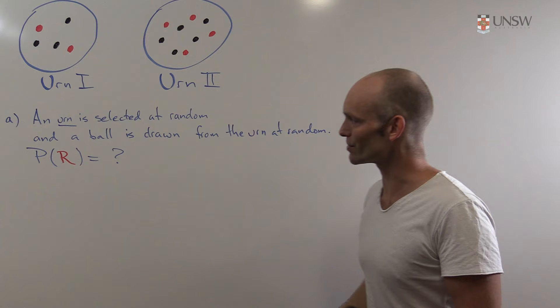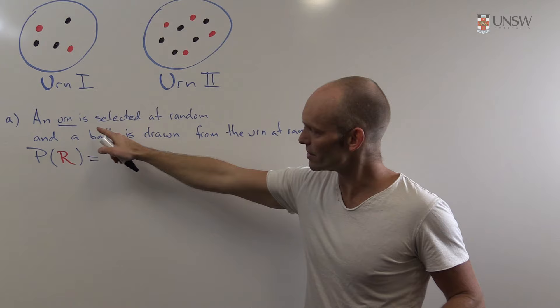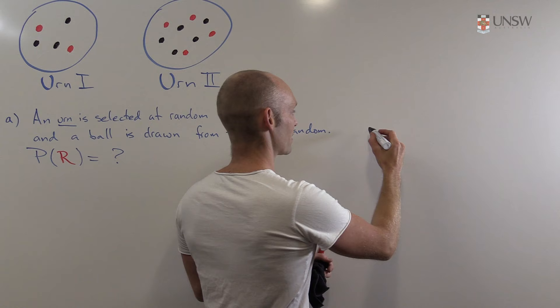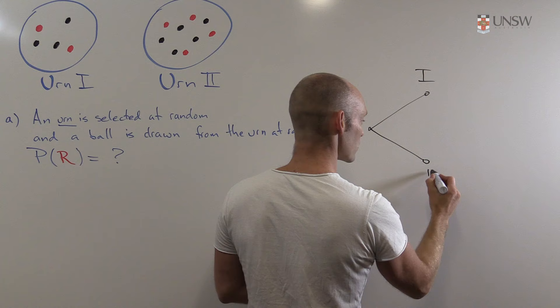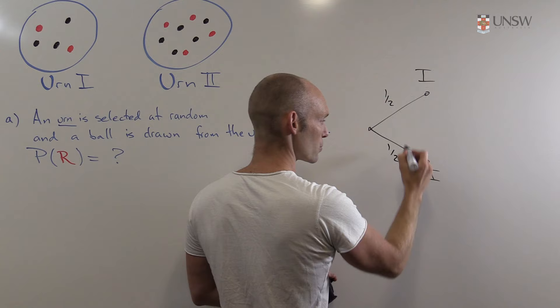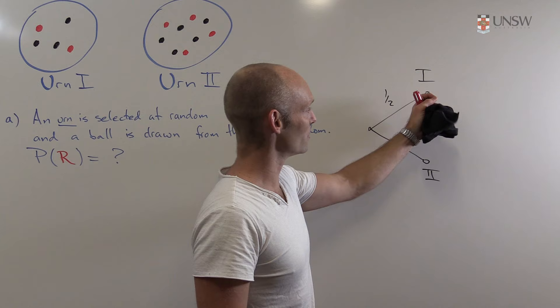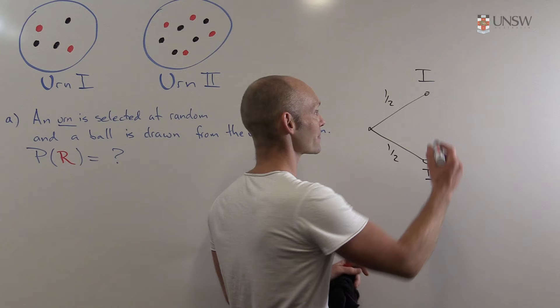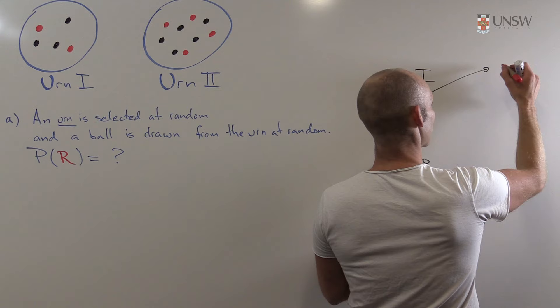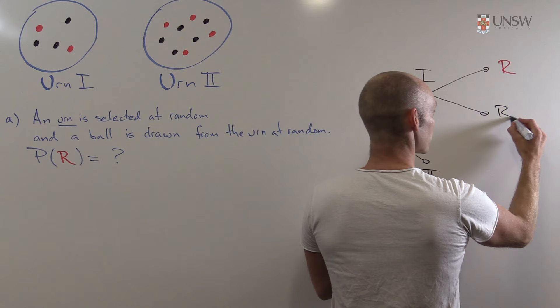This is not too difficult. We can draw up a decision tree. We could either choose urn number one or urn number two, each with probability one half. Then we look at the second part — we choose a ball at random from the chosen urn. If we chose urn number one, the ball could either be red (R) or black (B).